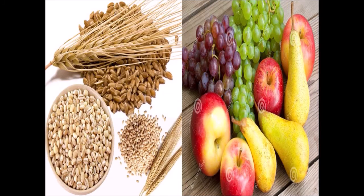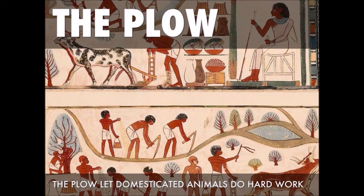Food and Agriculture. Agriculture was the main occupation. They cultivated wheat, barley, onions, grapes, apples, and dates. They domesticated cattle, sheep, and goat. They developed an irrigation system. The plough let domesticated animals do hard work.